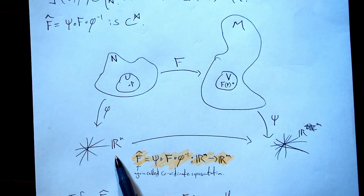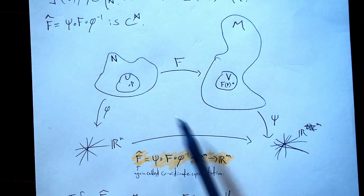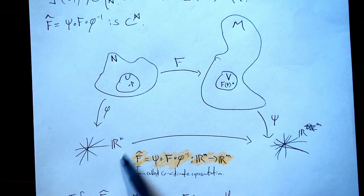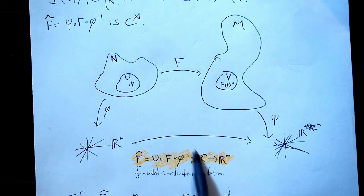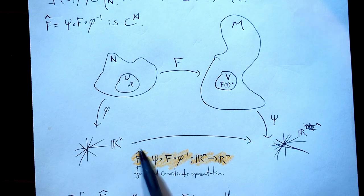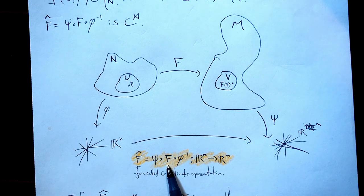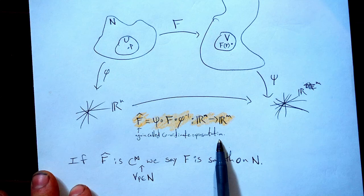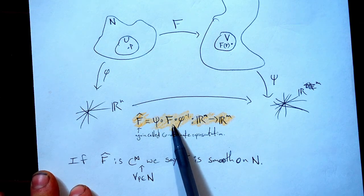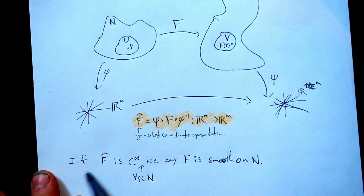But in the end, we have a function from ℝ^n to ℝ^m. Where we can use our familiar multivariable calculus from ℝ^n to ℝ^m, which we all studied in second year. So if this guy is infinitely differentiable, right? If F̂ is smooth, we say that F is smooth between N and M. This is again called the coordinate representation of the map, capital F. Just in writing what I said, if F̂ is smooth for all points in N, we say that F is smooth on M.